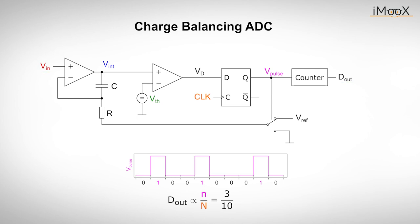Alternatively, the output signal can also be transmitted directly and later converted back to an analog value. This technique is often used because a digital signal is less susceptible to interference during transmission than an analog one.